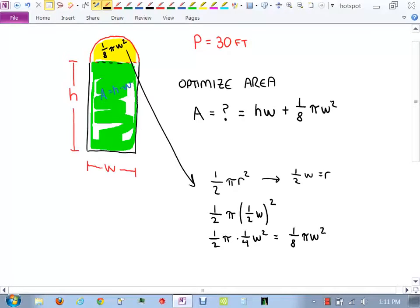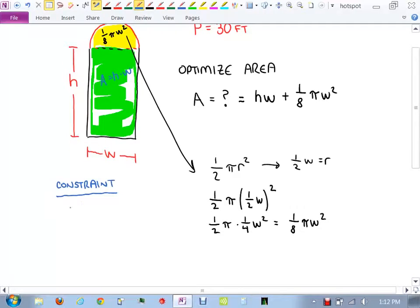So how am I going to eliminate one of those variables? Yeah, we're going to have to find a relationship between w and h using something I haven't used yet. What have I not used in this problem? That the perimeter has to be 30, right? So let's talk about perimeter. So this is what we called the constraint. The constraint on this problem is that my perimeter must be 30.